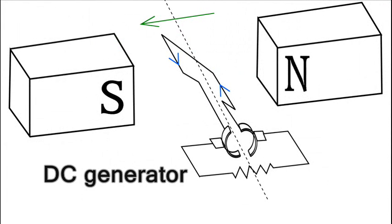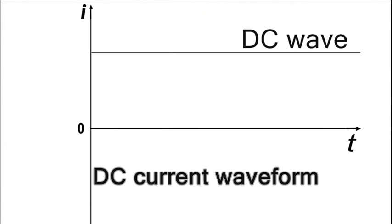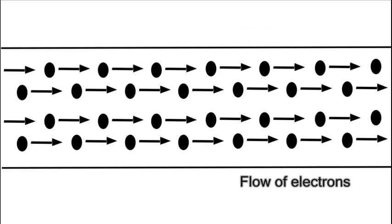DC generators produce something called direct current. Direct current always flows in the same direction because electrons always flow in the same direction.